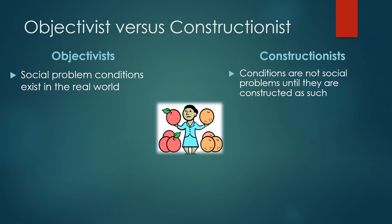Constructionists say that these conditions can exist, but that there is a process through which people come to look at these conditions as a social problem. Even though you can document that conditions exist, understanding them as a social problem is a matter of how people construct them — because not everybody constructs the same conditions as problematic. Some people find it in their interest to consider it business as usual instead of considering it a problem.